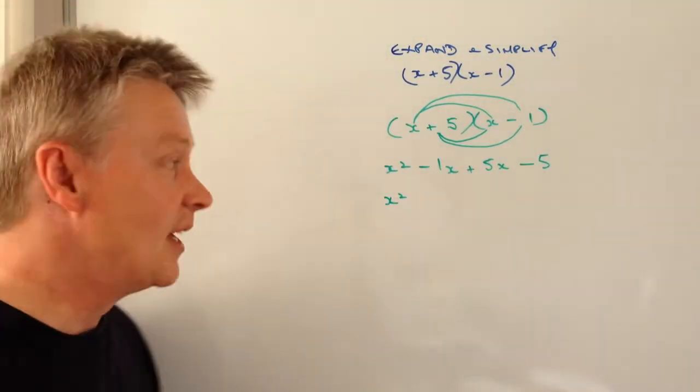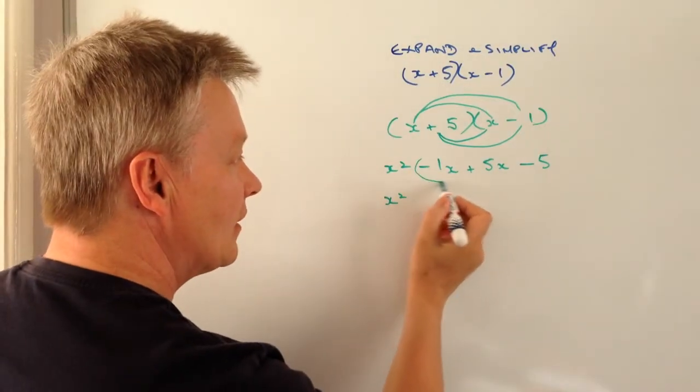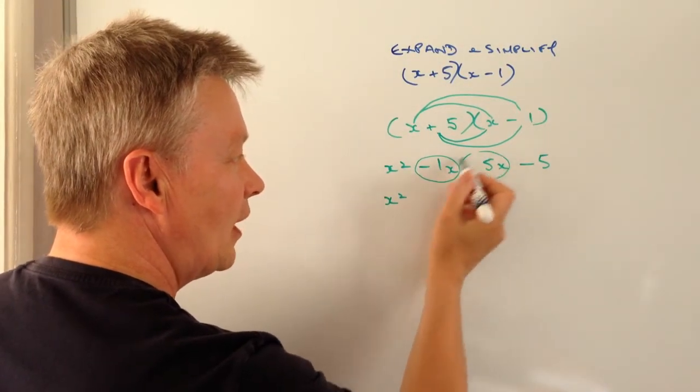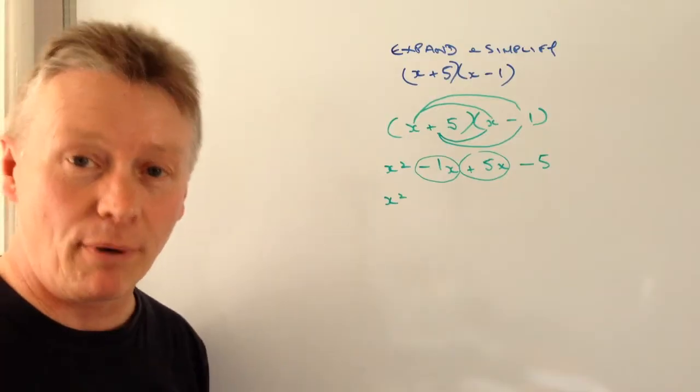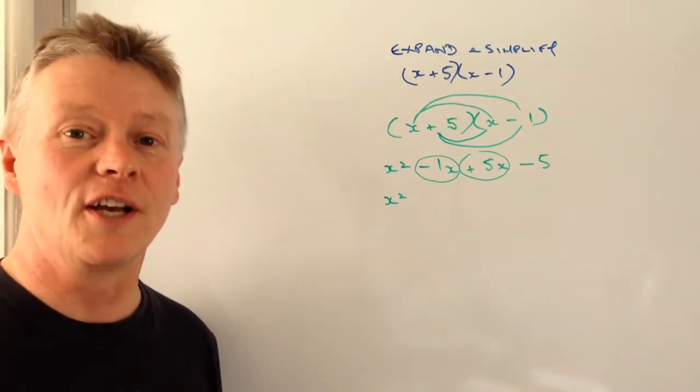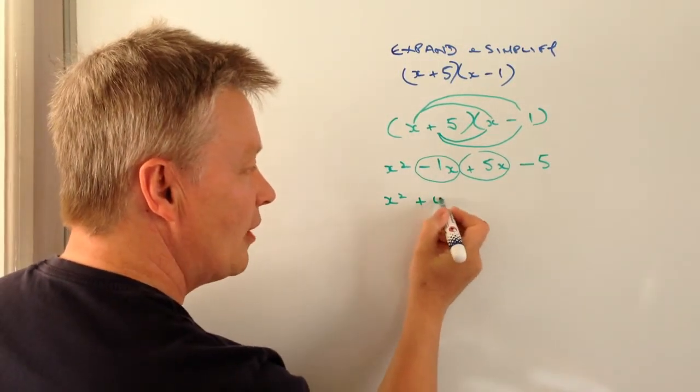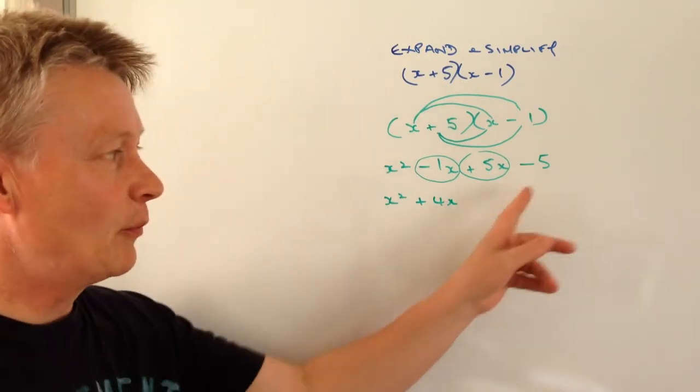The next one is minus 1X and plus 5X. Minus 1 plus 5 is going to be plus 4, so this will become plus 4X. Then we've got minus 5 at the end. So X squared plus 4X minus 5.